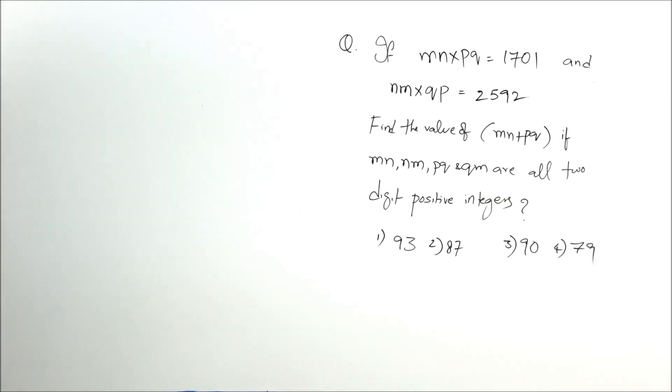If you look at the question: if MN × PQ = 1701 and NM × QP = 2592, find the value of MN + PQ if MN, NM, PQ, and QM are all two-digit positive integers.